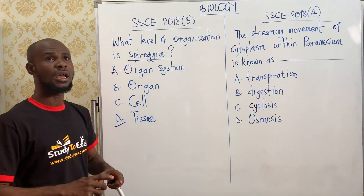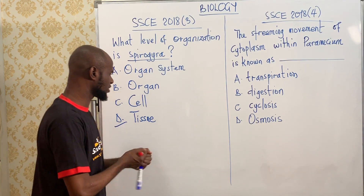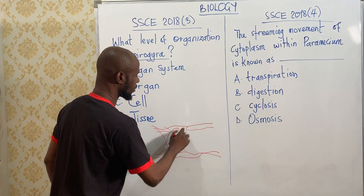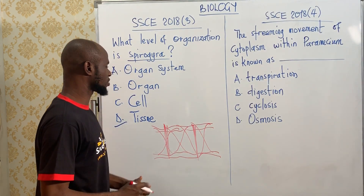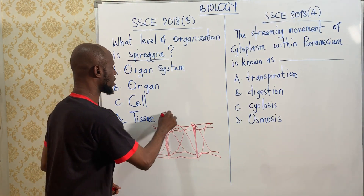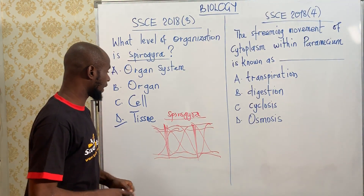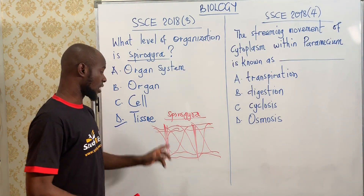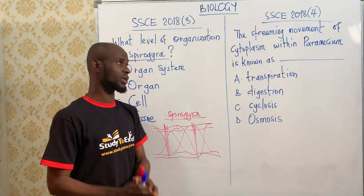Filaments are cylindrical cells connected end to end by intercellular walls. Spirogyra is a multicellular organism, and when cells come together they form what is called tissue. Therefore spirogyra belongs to the tissue level of organization. All functions are performed by this spirogyra except reproduction, which is performed separately.